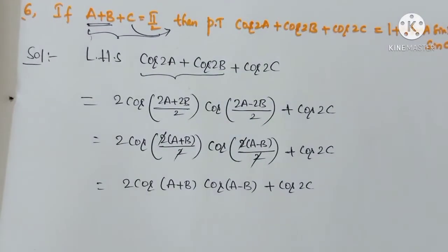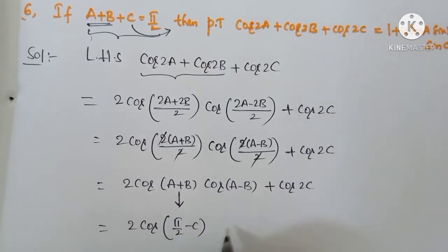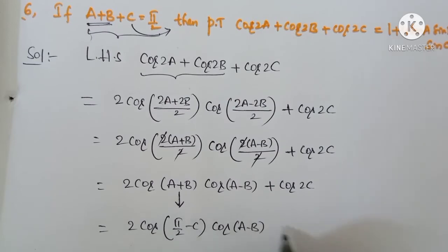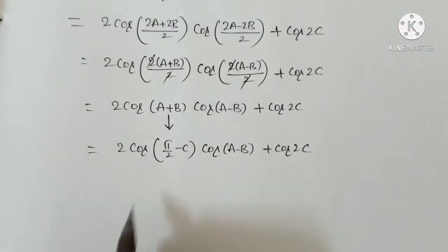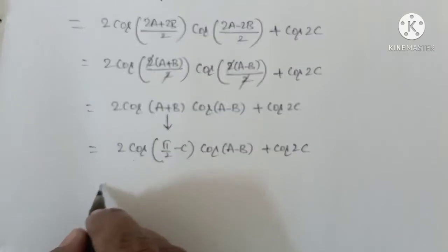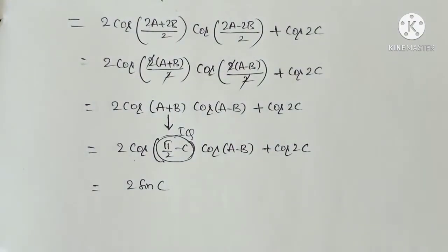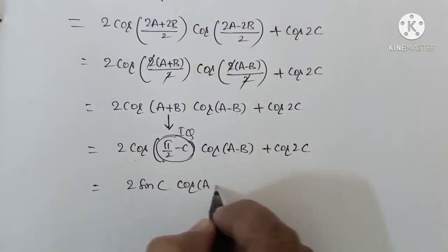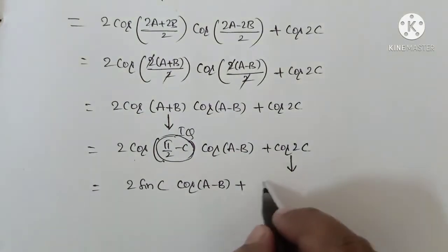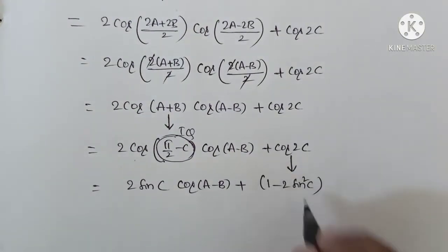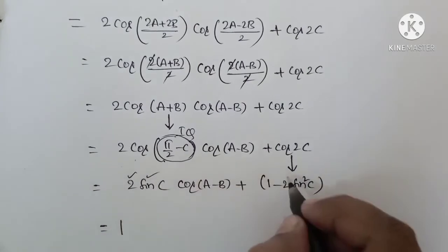Since A plus B plus C equals Pi by 2, we have A plus B equal to Pi/2 minus C. So we replace to get 2 Cos(Pi/2 minus C) Cos(A minus B) plus Cos 2C. When there is 90 degrees, cos converts to sin. So this becomes 2 Sin C Cos(A minus B) plus Cos 2C, and we apply the formula Cos 2C equals 1 minus 2 Sin squared C.